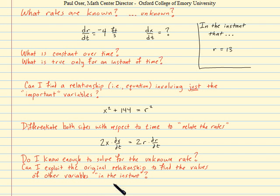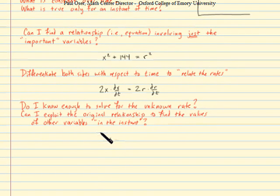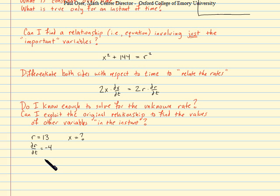So the follow-up question to this, once we realize that maybe there's something out there that I still need to know, is, can I exploit the original relationship, that's this one right here, the original relationship between the variables, the important variables, to find the values of the other variables in the instant, the other variables I need, in this case, X. Well, let's give ourselves a little more room. Slide this up just a wee bit more. Let's remind ourselves of what we know in the instant that we're after. R equals 13. dr/dt, of course, is negative 4. What could X equal, though? We don't know. But going back to this original relationship and using this information, doesn't that tell us in the instant we're interested in?